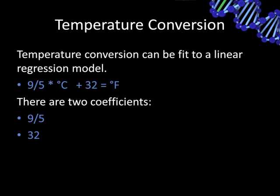Let's look at a simple example of how you might use a linear regression model: temperature conversion, converting from Celsius to Fahrenheit. Here you can see the simple equation to do this. There are really two coefficients: 9/5 and 32. You may not think of 32 as a coefficient because it's not multiplied by anything, but it's effectively multiplied by the variable to the power of 0, which is 1. It helps to think of 32 as the y-intercept.